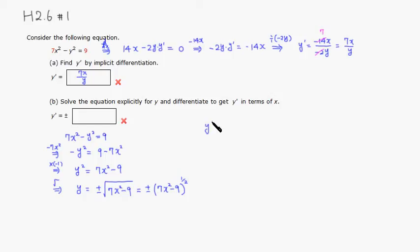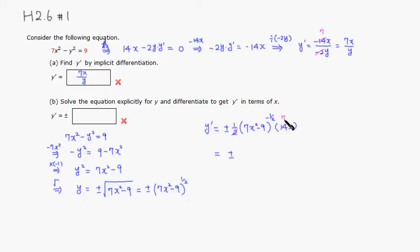Now we take the derivative. Write it as plus or minus 7x squared minus 9 raised to the 1/2 power. Using the chain rule: bring down the 1/2, keep the inside function the same, subtract 1 from the power, and multiply by the derivative of the inside, which is 14x. The 2 and 14 cancel to give 7. So y prime equals plus or minus 7x over the square root of 7x squared minus 9.